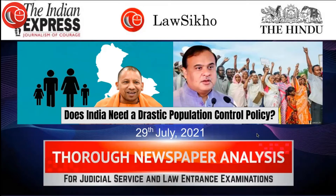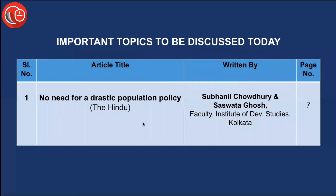Hello everyone and welcome to Daily Newspaper Analysis, brought to you by Lawseekho. Today we have only one article for discussion, from The Hindu newspaper. The title of this article is 'No Need for a Drastic Population Policy.' We have previously discussed the UP population policy, and now another state has brought a similar policy. So, do we really require this kind of drastic population policy in the current situation? That will be discussed in this article.